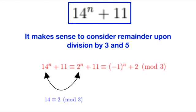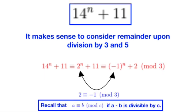We first consider the remainder upon division by 3, or modulo 3. Note that, since 14 leaves a remainder of 2 upon division by 3, we can replace 14 with a 2. Furthermore, from our definition earlier, we know that 2 is congruent to minus 1 modulo 3. So we can further replace it to get minus 1 power n plus 2 modulo 3.